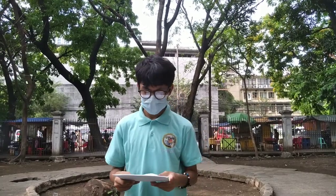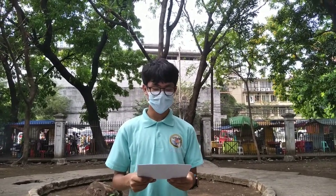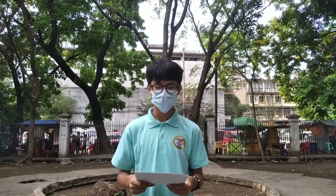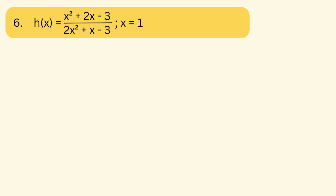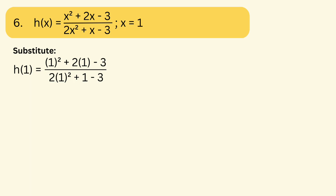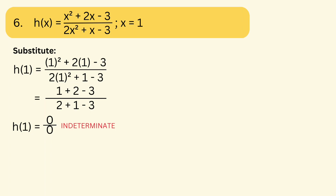For item number 6, h(x) = (x² + 2x − 3) / (2x² + x − 3), if x = 1. We just have to substitute 1 for each x. So h(1) = (1² + 2(1) − 3) / (2(1²) + 1 − 3). 1 squared is 1, 2 times 1 is 2, then copy the −3. We have to square it first before multiplying by 2, so 1 squared is 1, 1 times 2 is 2, then copy 1 minus 3. We end up with (1 + 2 − 3) / (2 + 1 − 3). Evaluating gives 0/0. Therefore h(1) = 0/0 and it's indeterminate.